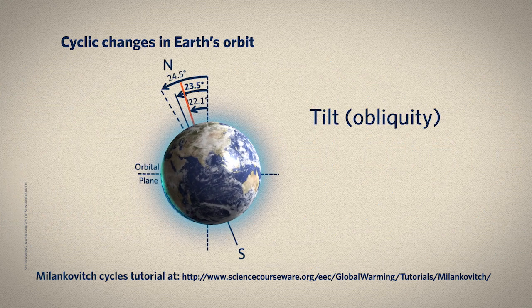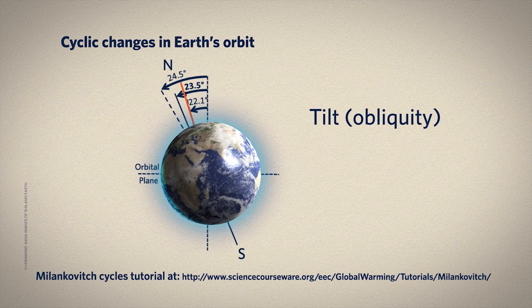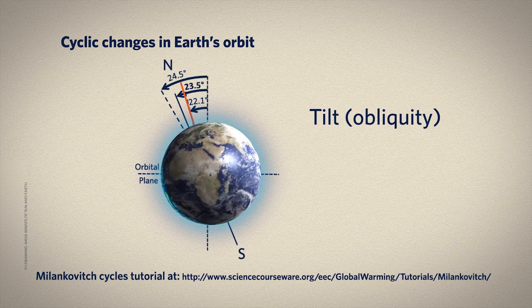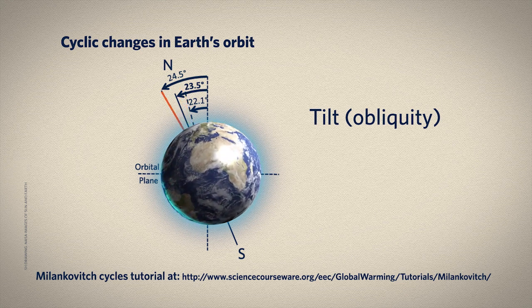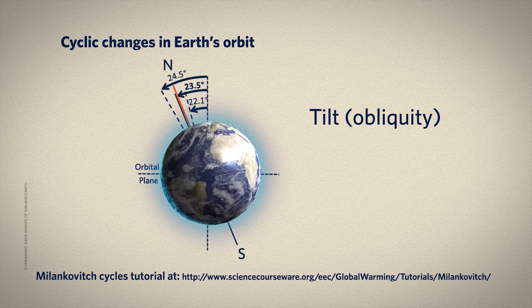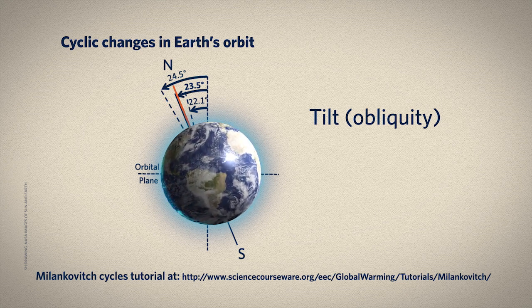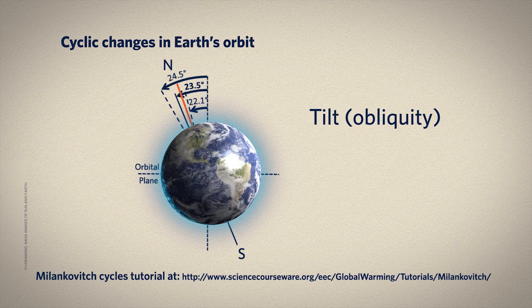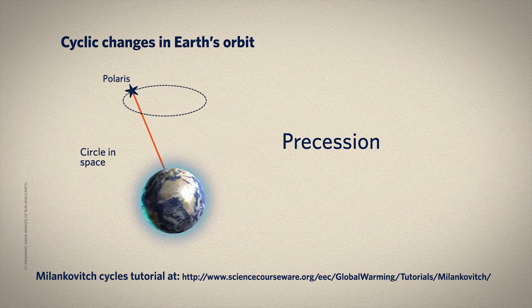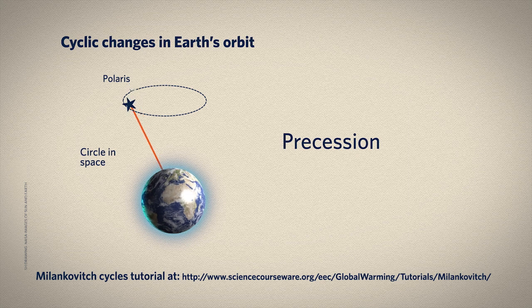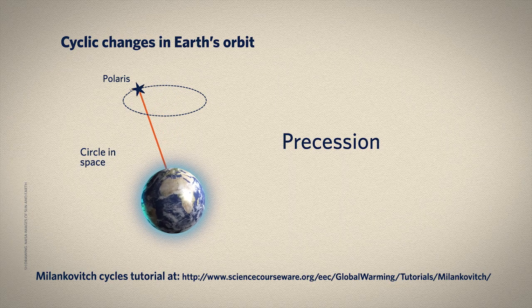It takes about 41,000 years for the tilt of Earth's axis to go from minimum tilt back to maximum. We're currently at about 23.5 degrees of tilt away from vertical, and the tilt is getting smaller — we're on our way to standing more upright. And for precession, which is the one that's really hardest to grasp, the Earth's axis describes a circle in space, completing one circle approximately every 26,000 years. This is the one that influences what seasons happen where along Earth's orbital path.